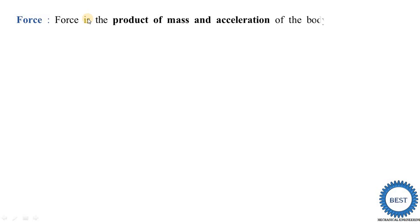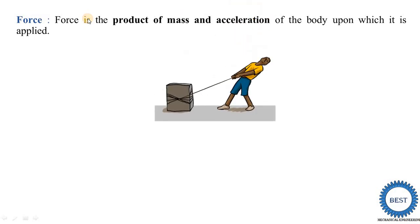Force is the product of mass and acceleration of the body upon which it is applied. Here you see this one image — this is one body. It has a certain mass, denoted as M. This person is applying some force, trying to pull this body, so it is called the pulling force.